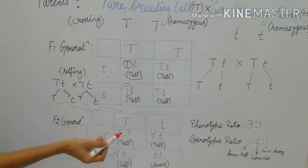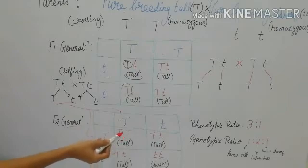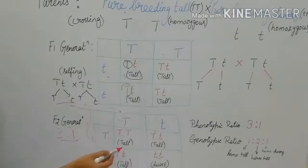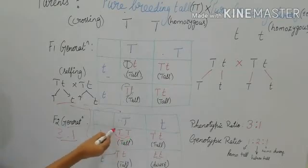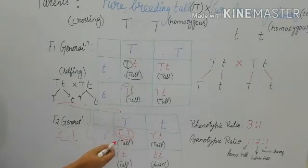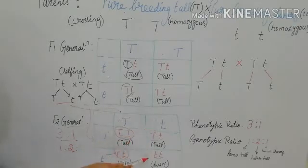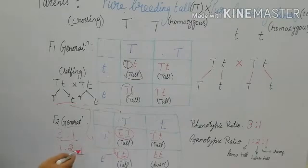The phenotypic ratio — how the offspring look externally — is 3 tall to 1 dwarf, that is a 3:1 ratio. The genotypic ratio — how the genes are arranged internally — is 1 homozygous tall (TT) : 2 heterozygous tall (Tt) : 1 homozygous dwarf (tt), that is a 1:2:1 ratio. This is Mendel's monohybrid cross.